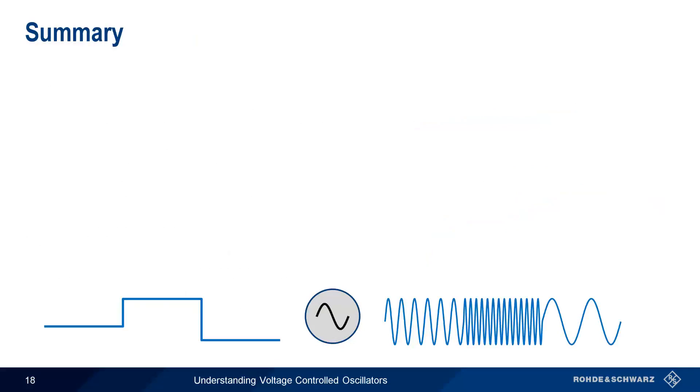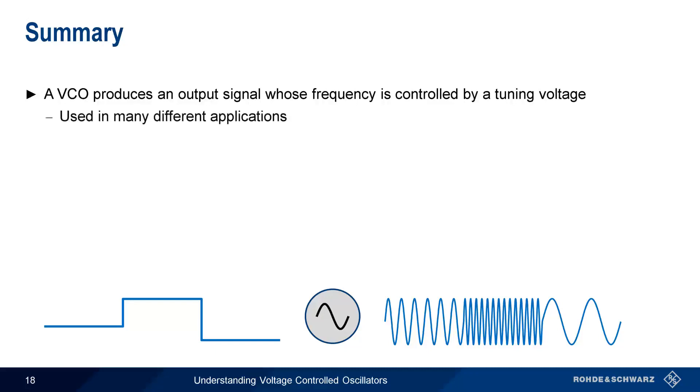Let's end with a brief summary. A voltage-controlled oscillator, or VCO, is a device that produces an output signal whose frequency can be changed, or controlled, by means of an external tuning voltage. VCOs are used in many different applications, and are one of the fundamental building blocks of RF systems.